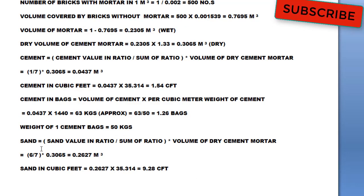Now, sand we have to find out. For sand, we have formula: sand value in ratio divided by sum of ratio into volume of dry cement mortar. Sand value in ratio is 6 and sum of ratio is 7 multiplied by 0.3065 which is our volume of dry cement mortar. Now, we have to find out the volume. So we are getting volume as 0.2627 cubic meter as the volume of sand. This value is in cubic meter. If you want to convert to cubic feet, multiply by 35.314, you are getting a value as 9.28 cubic feet.